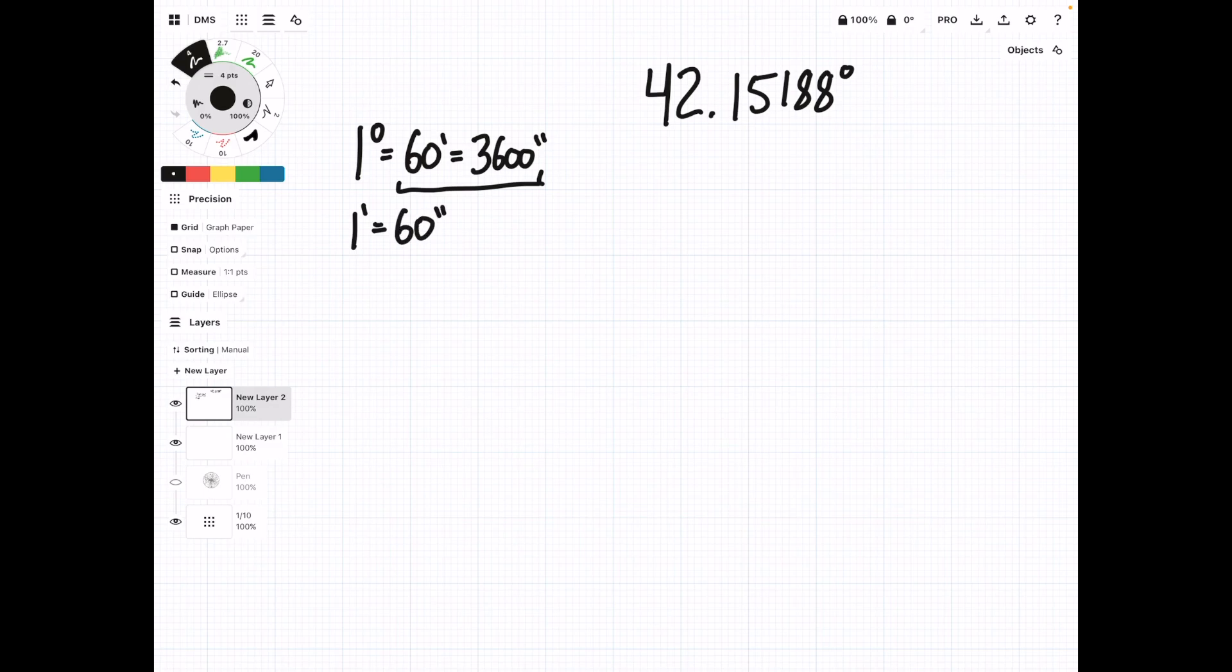So, now let's jump into the conversion. We have 42 degrees here, and then some fraction of a degree. So all we're going to do to get the minutes is take this fraction and multiply it by 60. Let's do that here. 0.15188 degrees times 60. Plug that into our calculator. 0.118 times 60. And this equals 9.1128 minutes.